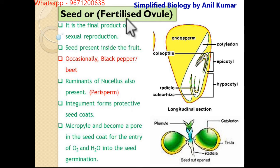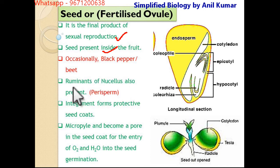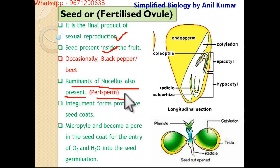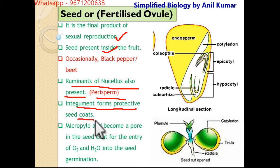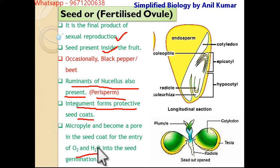What is a seed, or the fertilized ovule? It is the final product of sexual reproduction. The seed is present inside the fruit. But occasionally, in black pepper and beet, a remnant of the nucellus is also present, named as the perisperm. The integuments are modified to form the protective seed coat. At the micropylar end, there is some vacant space where nuclear cells are not present — this is the area where exchange of oxygen or water takes place during seed germination.